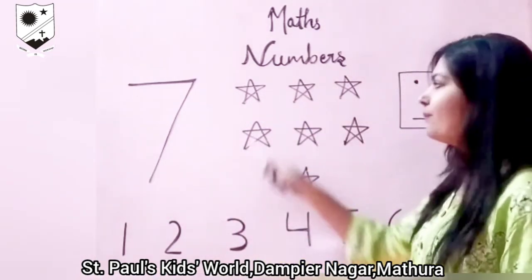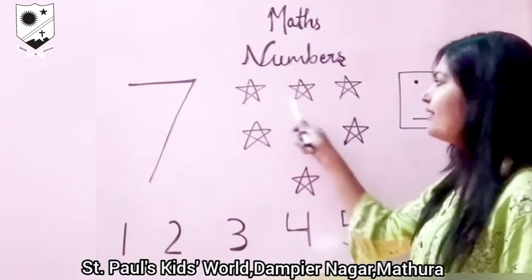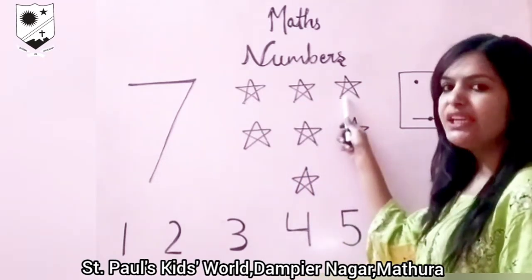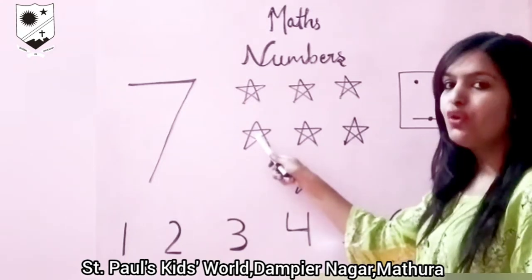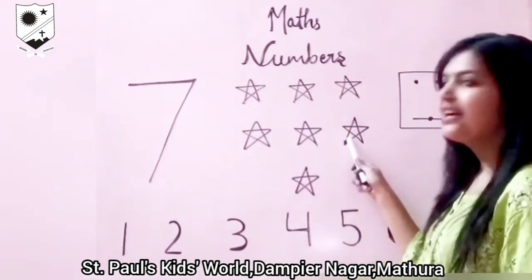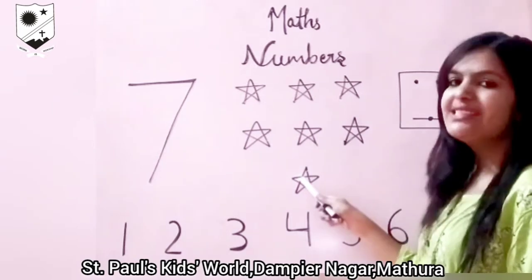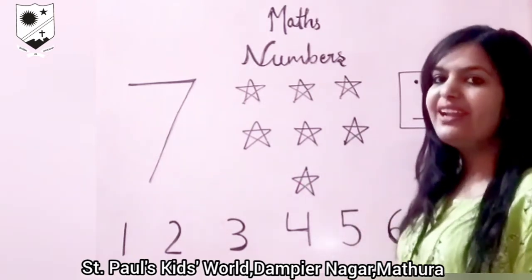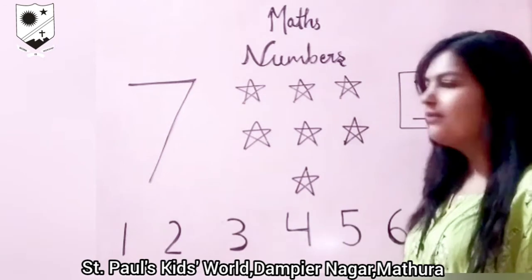Let's count them. 1, 2, 3, 4, 5, 6, 7. How many stars are there? 7 stars are there.